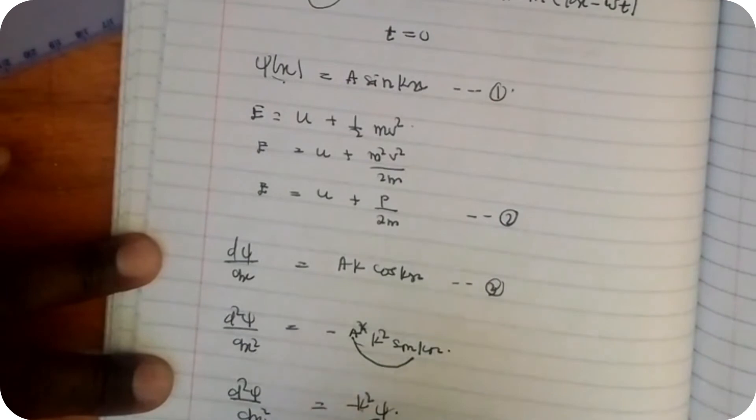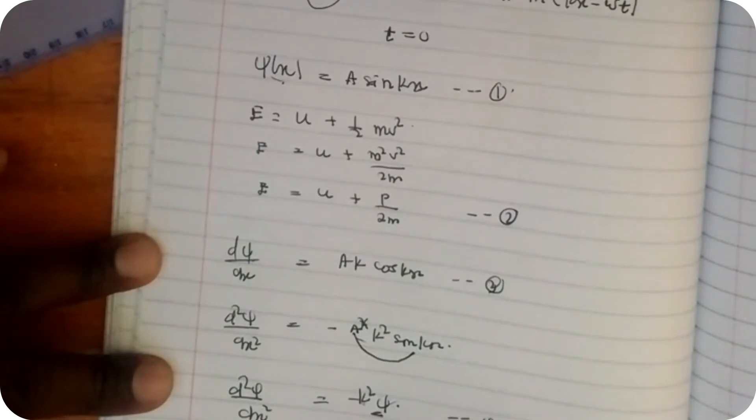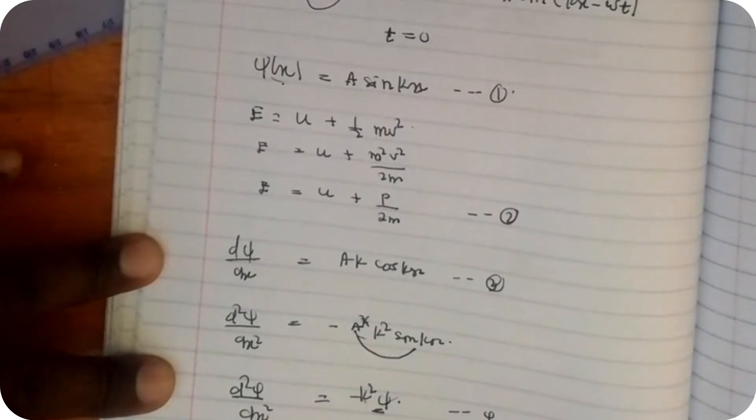Introducing ψ means it will be Eψ equals Uψ plus p²ψ/2m. This is now equation number 5.